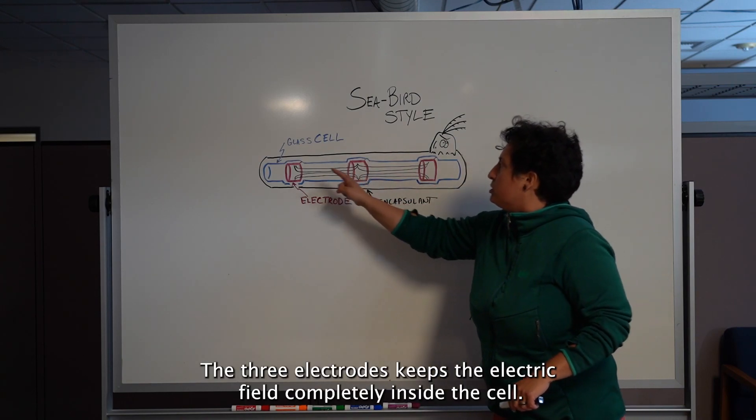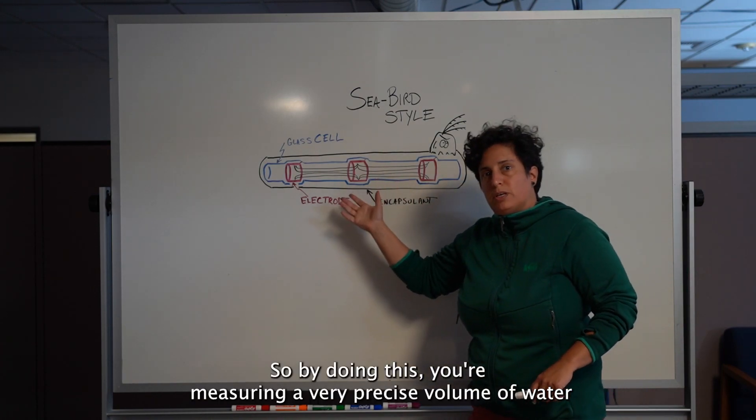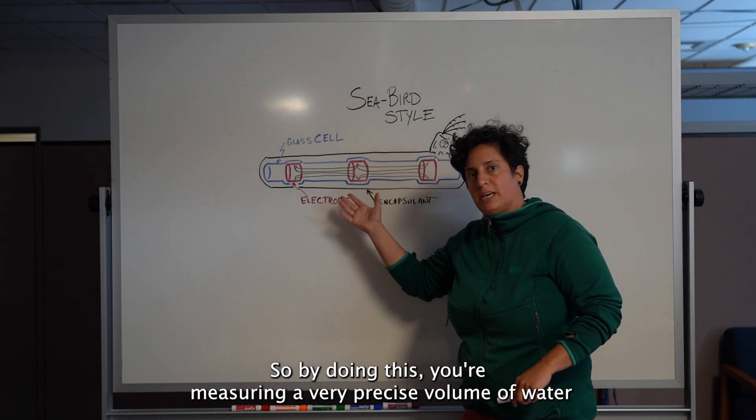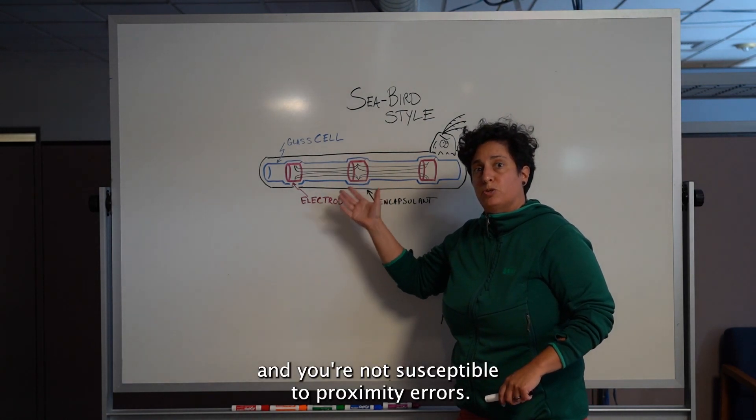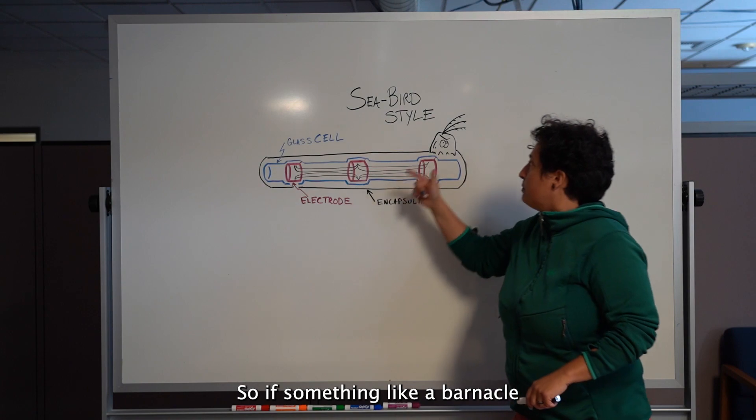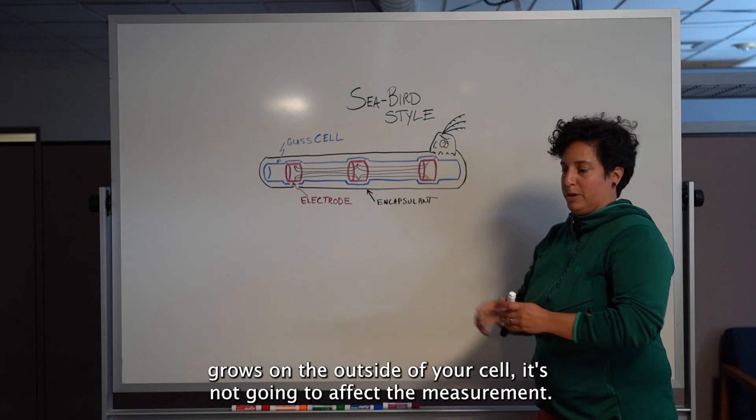The three electrodes keeps the electric field completely inside the cell. So by doing this, you're measuring a very precise volume of water, and you're not susceptible to proximity errors. So if something like a barnacle grows on the outside of your cell, it's not going to affect the measurement.